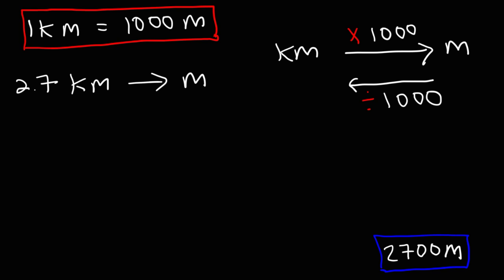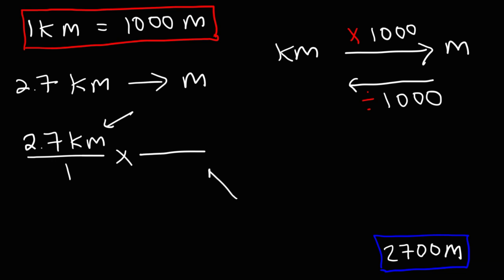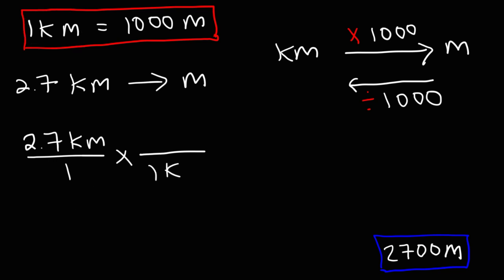But how do we show our work? We need to start with the value that was given to us, which is 2.7. In the next fraction we're going to put our conversion factor. One part of the equation goes on one side of the fraction and the other part on the other side. Notice that we have the unit kilometers on the top part of the fraction, so we need to put the same unit on the bottom — therefore that part of the conversion factor goes on the bottom, and the 1,000 meters goes on top.